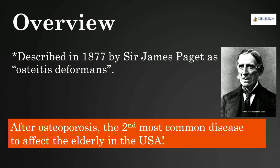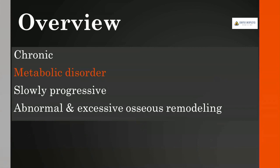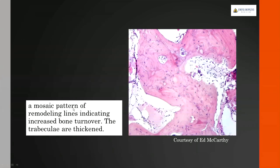It's important as radiologists to realize that after osteoporosis, Paget's disease is in fact the second most common disorder to affect the elderly in the United States. Paget's disease is a chronic metabolic disorder that is slowly progressive, characterized by abnormal and excessive osseous remodeling—seen here in the mosaic pattern—resulting from increased bone turnover.